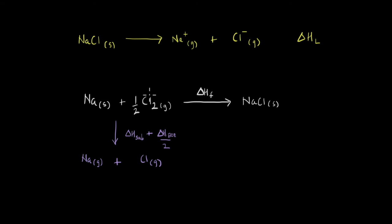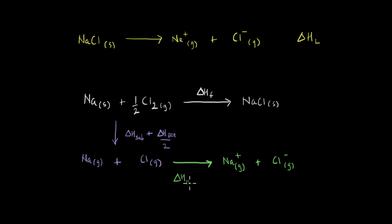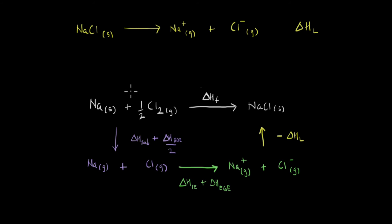To convert gaseous sodium and chlorine atoms into ions, we provide the ionization energy for sodium and the electron gain enthalpy for chlorine. So the total enthalpy for this step is the ionization enthalpy plus the electron gain enthalpy for chlorine. The final step — where the ions come together to form NaCl — is the lattice formation enthalpy, written as −ΔH_L by sign convention.